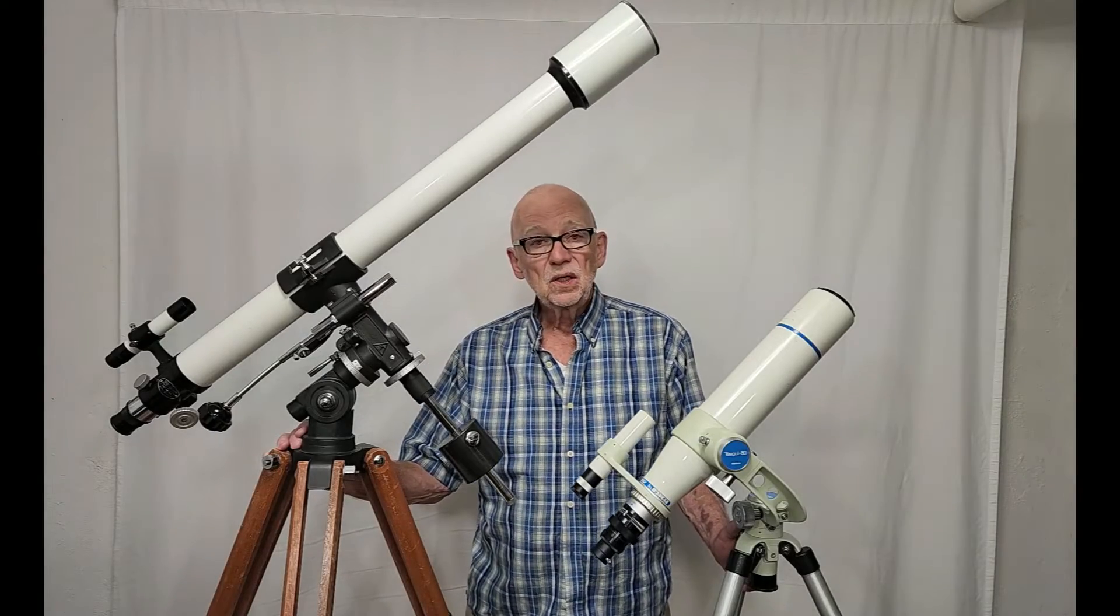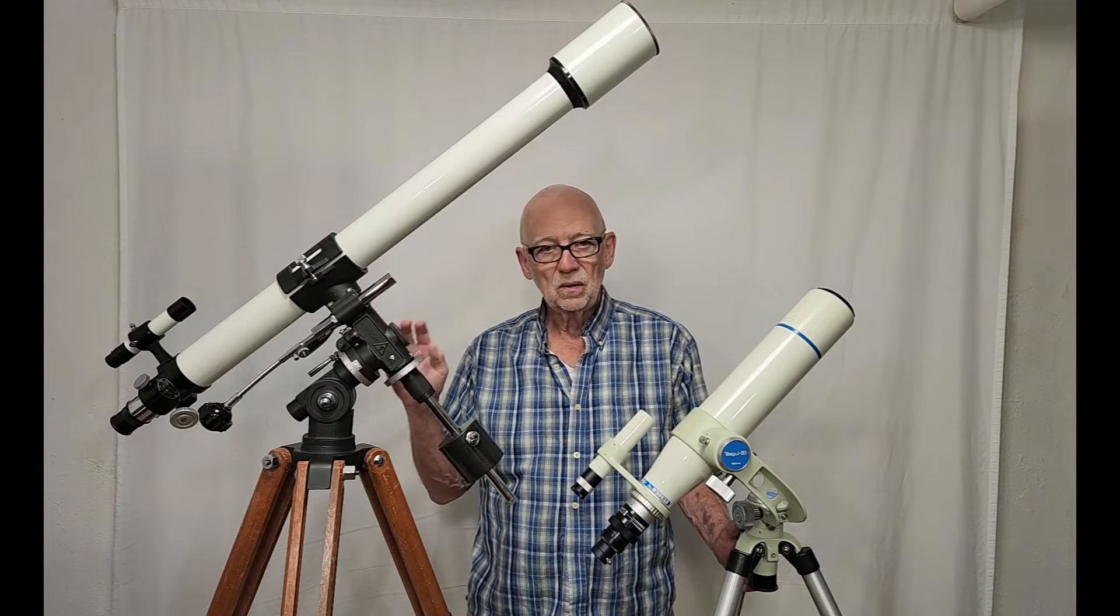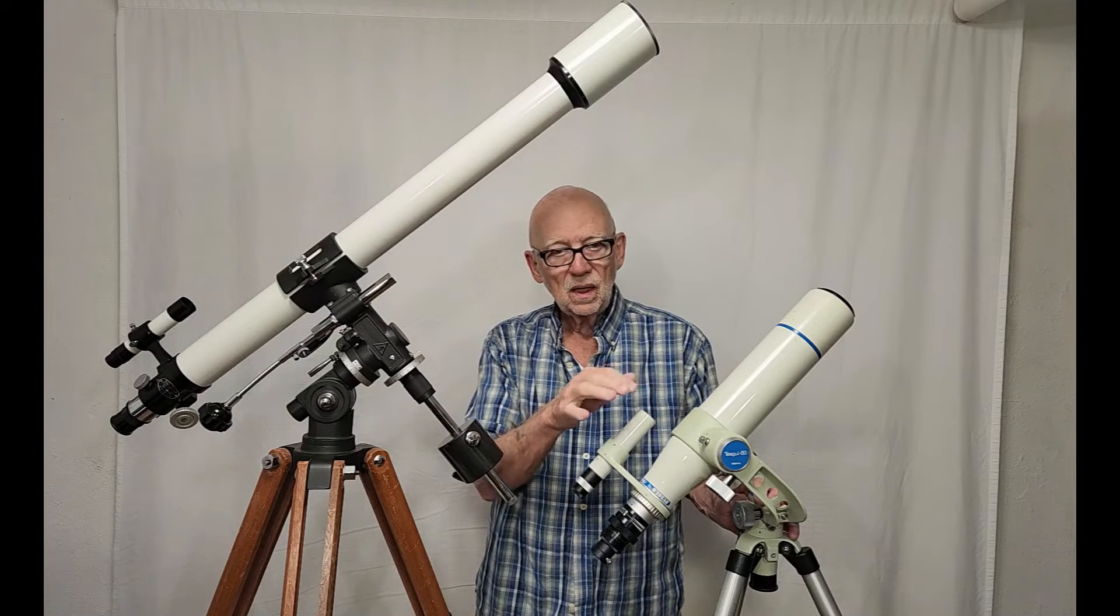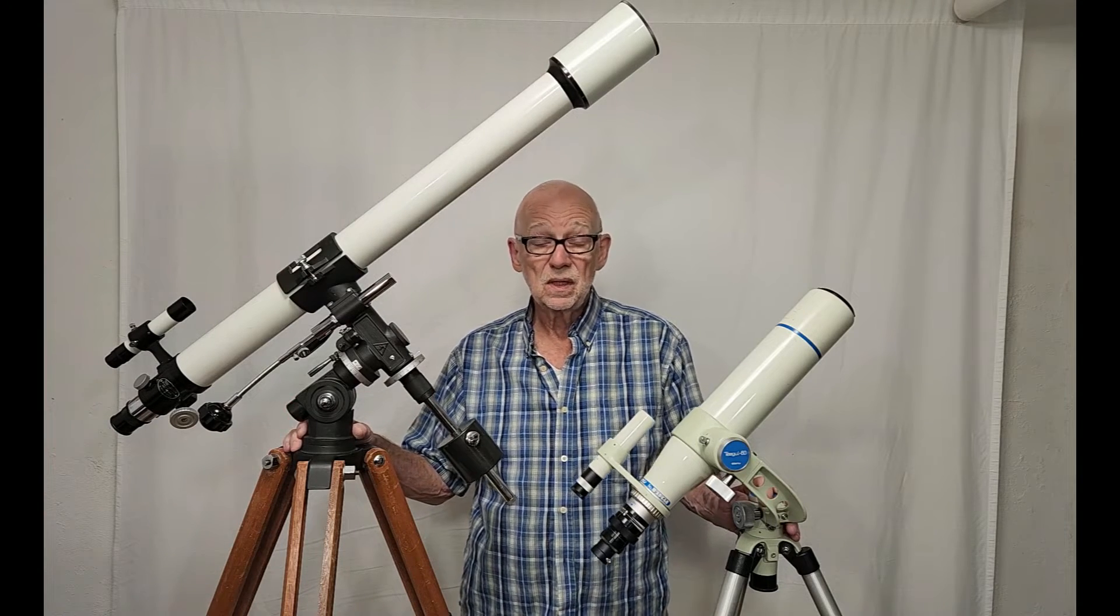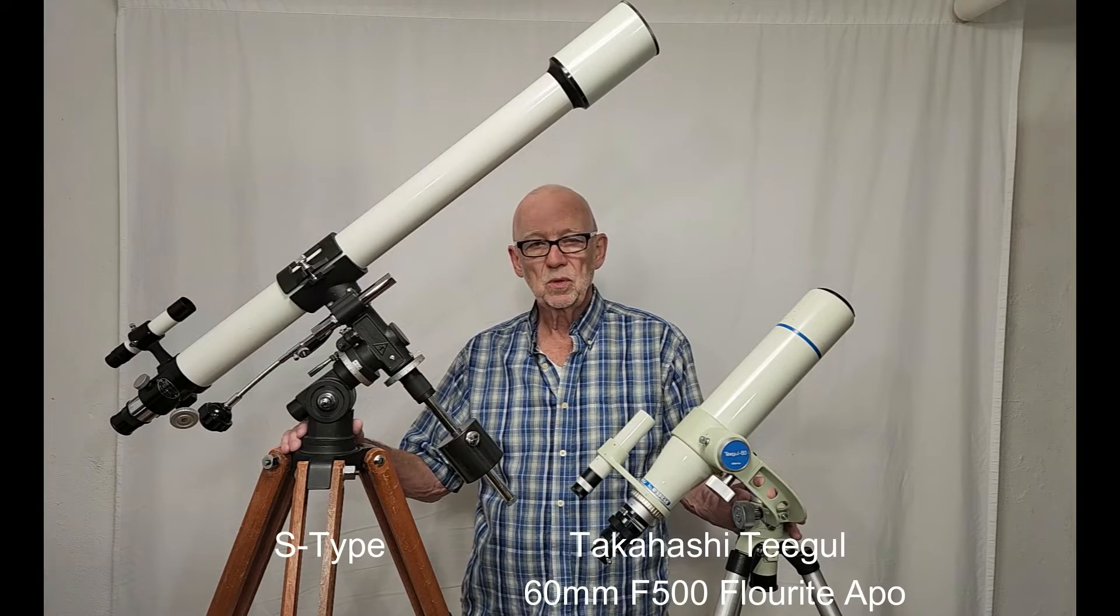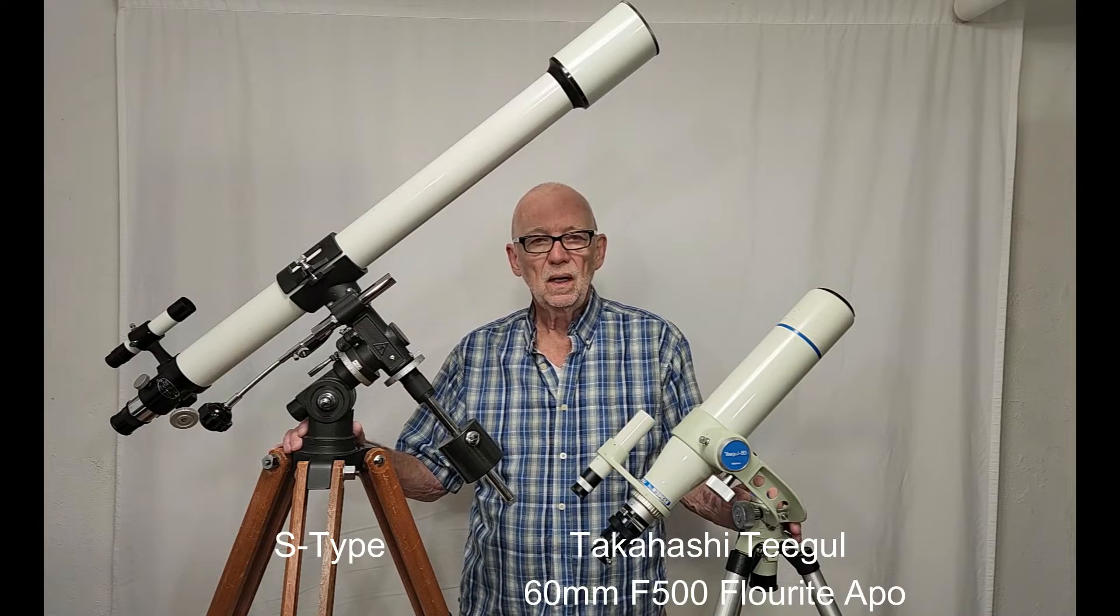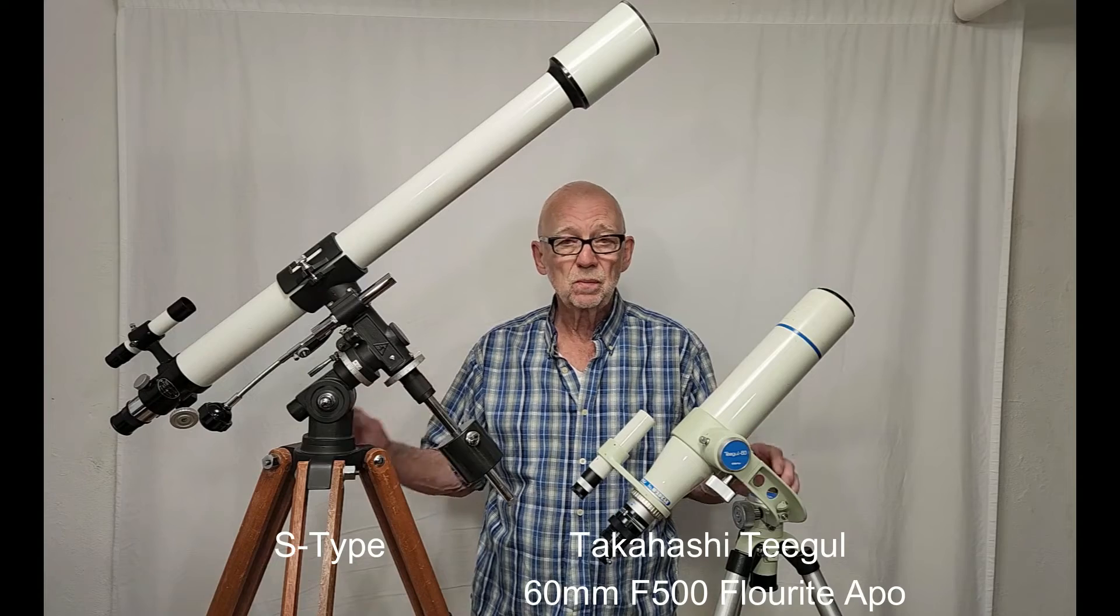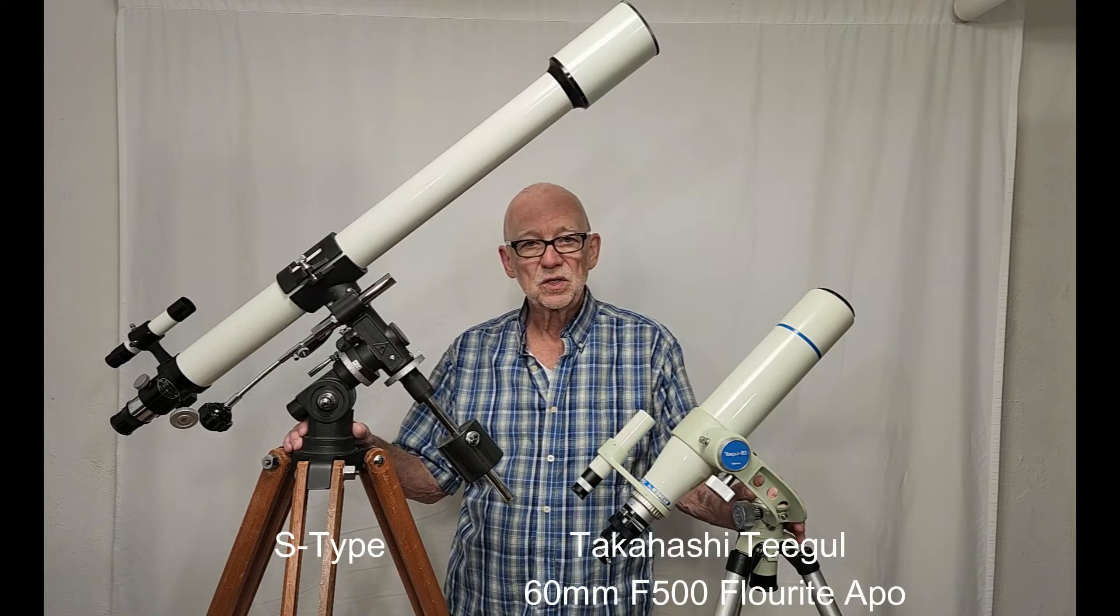Last night I took this telescope, the S-type telescope, out and I compared it with this telescope. This is a Takahashi Tegel from the early 1990s. It's a 60mm, about the same aperture, closed. It's only 500mm focal length, but you can compensate for the difference in focal length between these scopes by using the right eyepieces. And I compared them at the same magnifications.